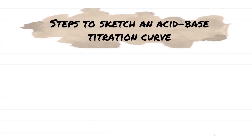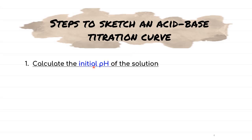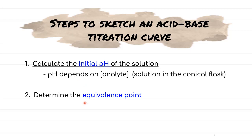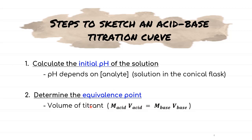You'll be introduced to four important steps to sketch a titration curve. The first step involves calculating the initial pH of the solution, which depends on the analyte concentration. The second step is to determine the equivalence point, which has two axes: the x-axis is the volume of titrant, determined from the formula M_A·V_A = M_B·V_B, and the y-axis is the pH, determined from salt hydrolysis.